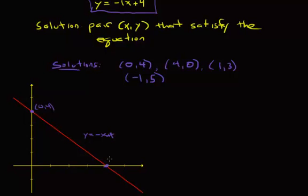How about 4, 0? Well, that's right here. How about 1 comma 3? About right there. Have you seen a pattern?